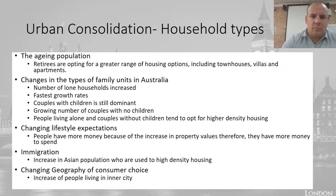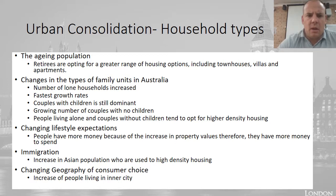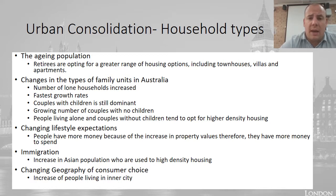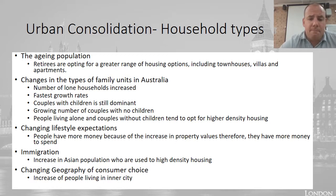Urban consolidation has affected household types. Traditionally people lived in big houses with big blocks of land, but that's changing. We've seen an aging population — people who reach older age want to downsize to a smaller house. The family unit has also changed; no longer are we having three or five children per family. We're having more people who live on their own, don't get married, or are couples who don't have children, which means people want these smaller consolidated houses.